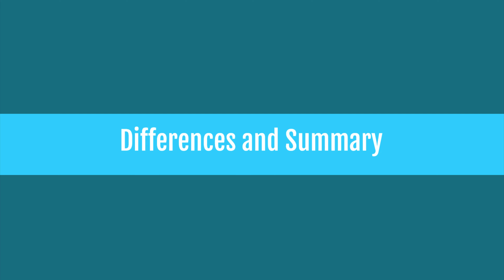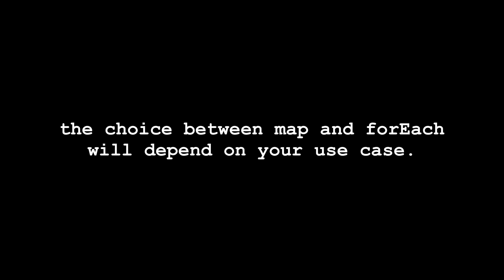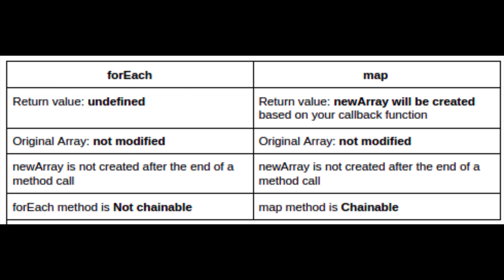Now let's look at the differences and summary. Both methods help us iterate through our array, and the choice between map and forEach will depend on your use case. Here is a picture you can use to compare the forEach method with the map method.